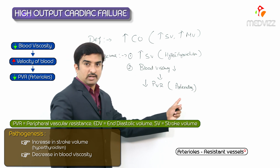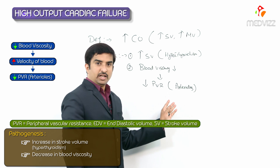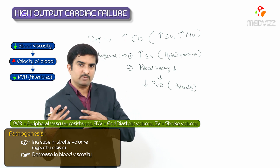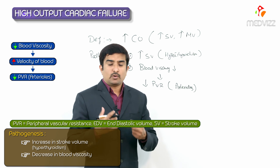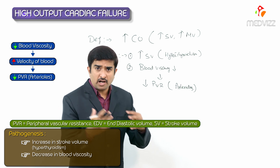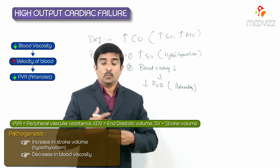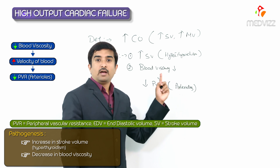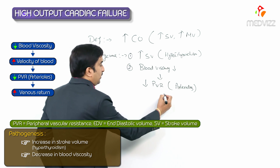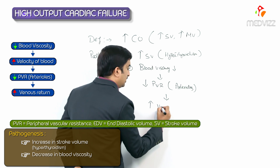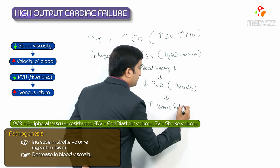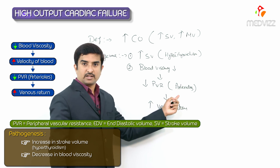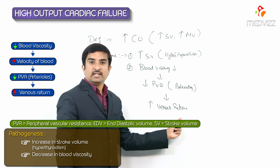Arterioles are called resistant vessels. What arterioles do is create a speed-breaker kind of action when blood is moving. Whenever the velocity of blood flow is much faster because of decreased viscosity, there will be a decrease in the peripheral vascular resistance exerted in the arterioles, which increases venous return to the heart. So, a decrease in blood viscosity leads to a decrease in PVR, which leads to an increase in venous return to the heart.